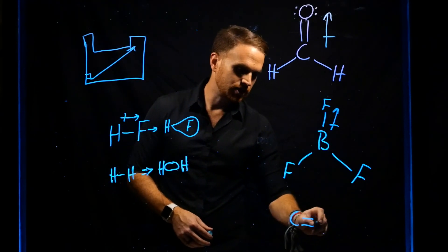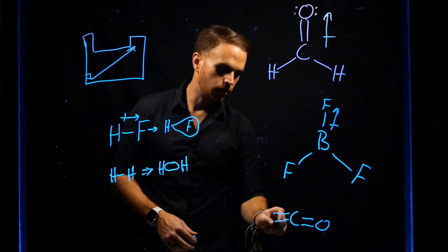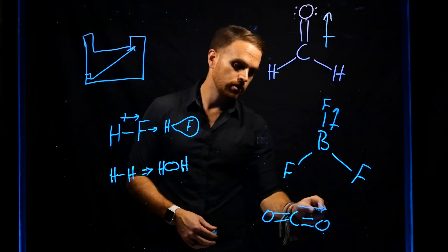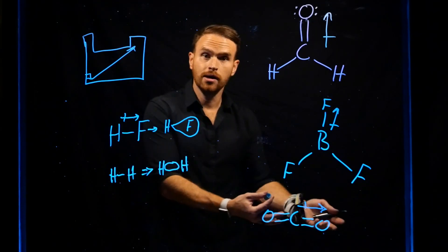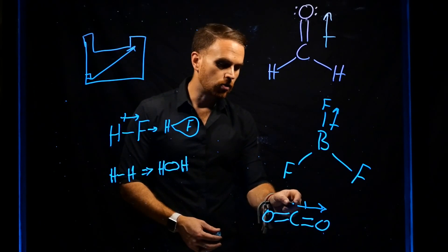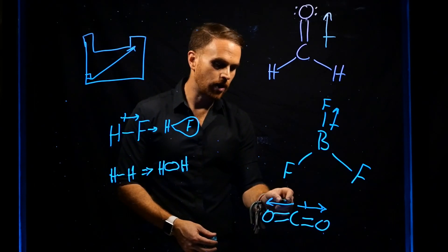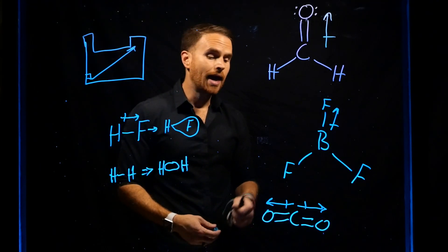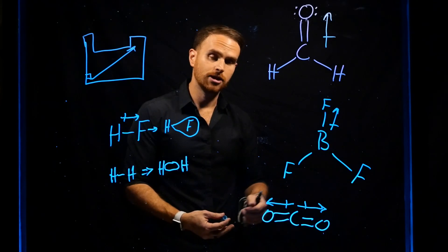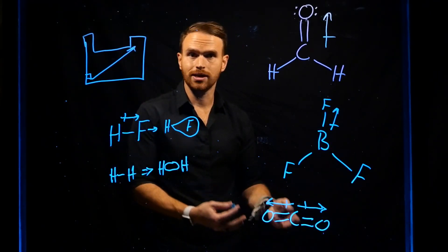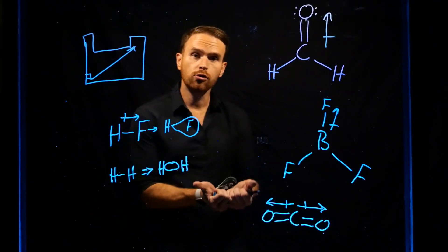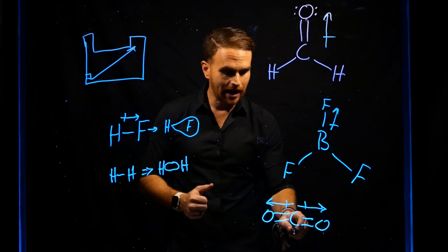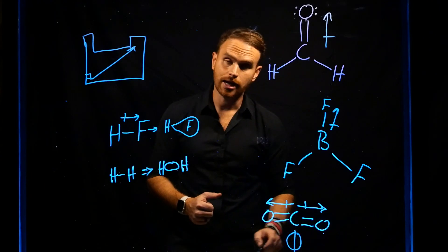Remember carbon dioxide: you do have a polar covalent bond with electrons being pulled towards oxygen on one side, but on the direct opposite side you have another dipole also pulling towards oxygen. Because of the linear three-dimensional shape of CO2, those dipoles pull in equal but opposite directions, which cancels out the overall polarity of the molecule.